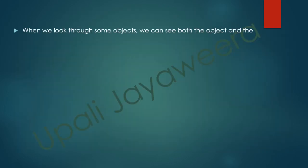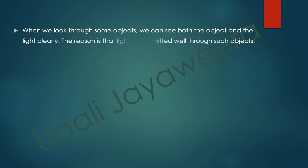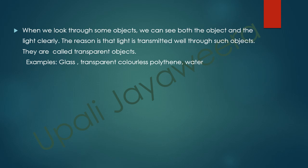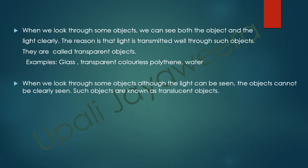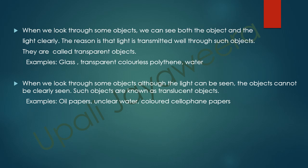When we look through some objects, we can see both the object and the light clearly because light is transmitted well through them. They are called transparent objects. Examples: glass, transparent colorless materials, water. When we look through some objects, although the light can be seen, the objects cannot be seen clearly. Such objects are known as translucent objects. Examples: oil papers, unclear water, colored telephone papers.